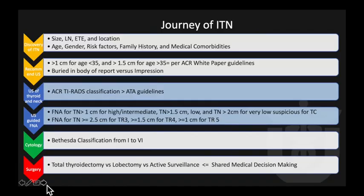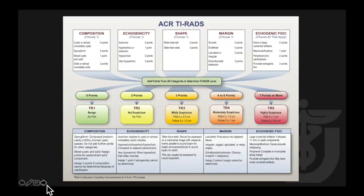Normal thyroid gland on ultrasound has homogeneous intermediate echogenicity, hyperechoic relative to the strap muscle — a good internal control for comparison. The carotid and jugular vein are posterior and lateral. For ACR TIRADS, composition: cystic or almost completely cystic = 0 points; spongiform nodule (>50% cystic) = 0 points; mixed cystic and solid = 1 point; solid or almost completely solid = 2 points. For echogenicity: anechoic = 0 points; hyperechoic or isoechoic = 1 point; hypoechoic = 2 points; very hypoechoic compared to strap muscle = 3 points — the darker, the worse. For shape: wider than tall = 0 points; taller than wide (AP/lateral dimension ratio >1.2) = 3 points. For margin: smooth = 0 points; ill-defined = 0 points; irregular or lobulated = 2 points; extrathyroidal extension = 3 points. Echogenic foci: none or comet tail artifact = 0 points; macrocalcification = 1 point; peripheral rim calcification = 2 points; punctated nodular microcalcification = 3 points — and multiple types can be added together.